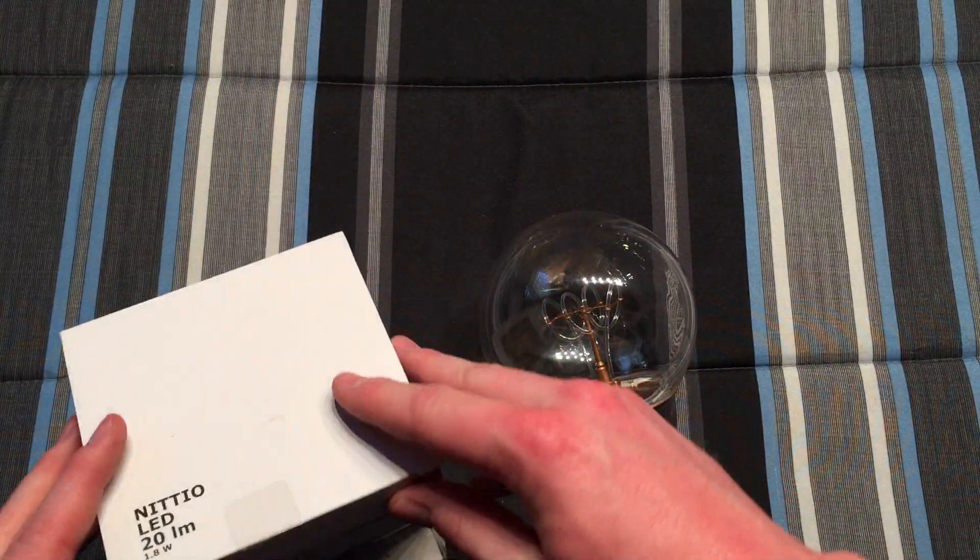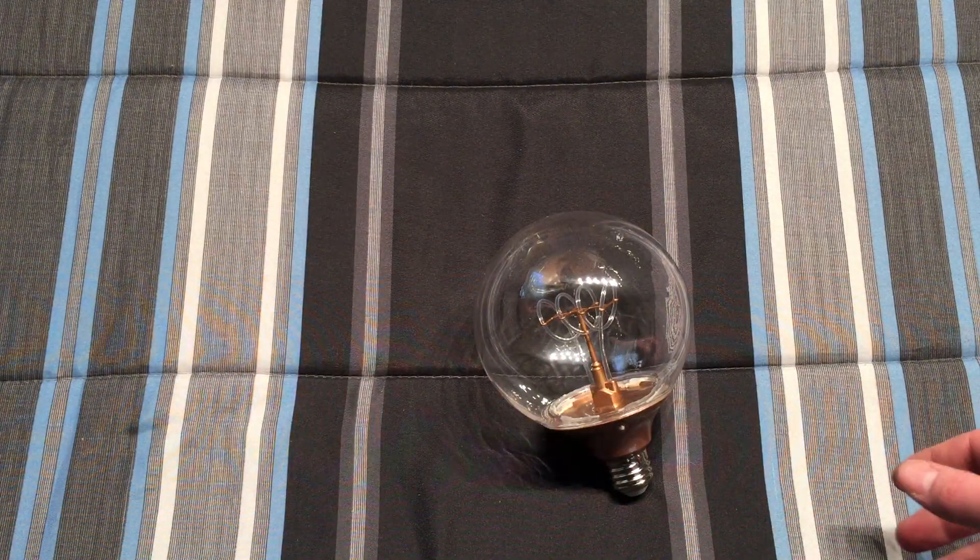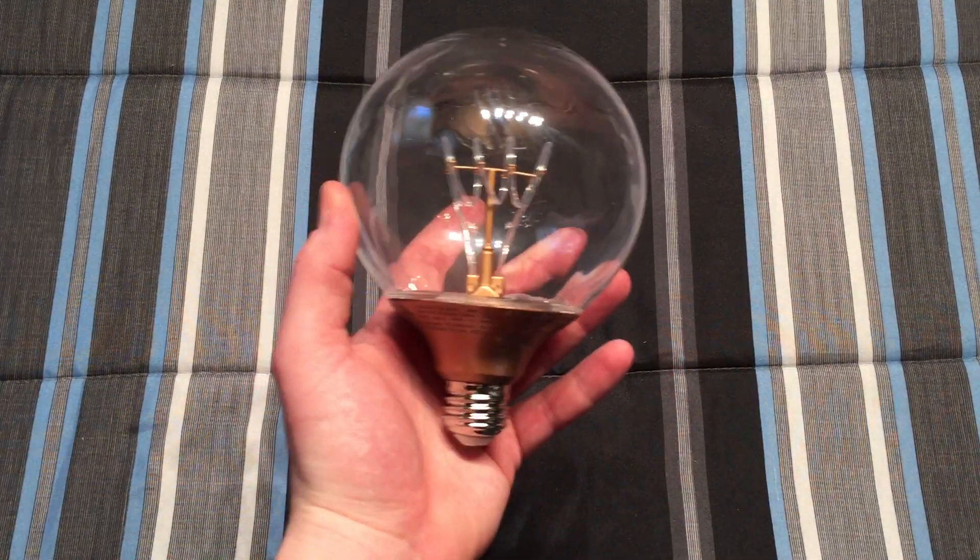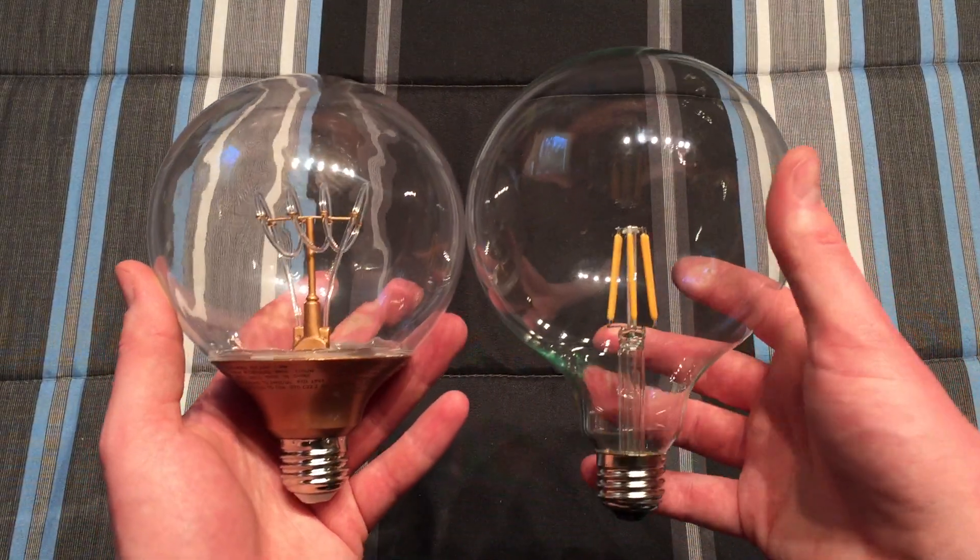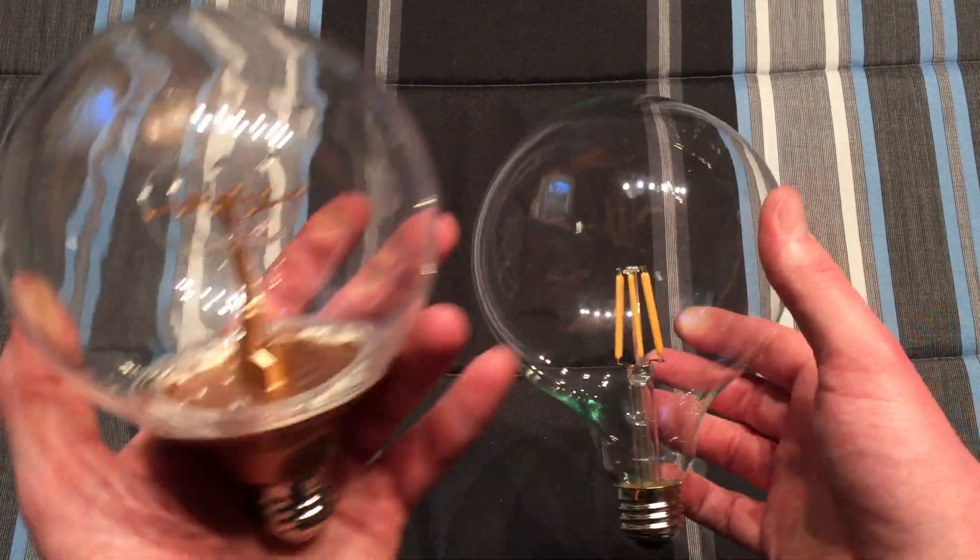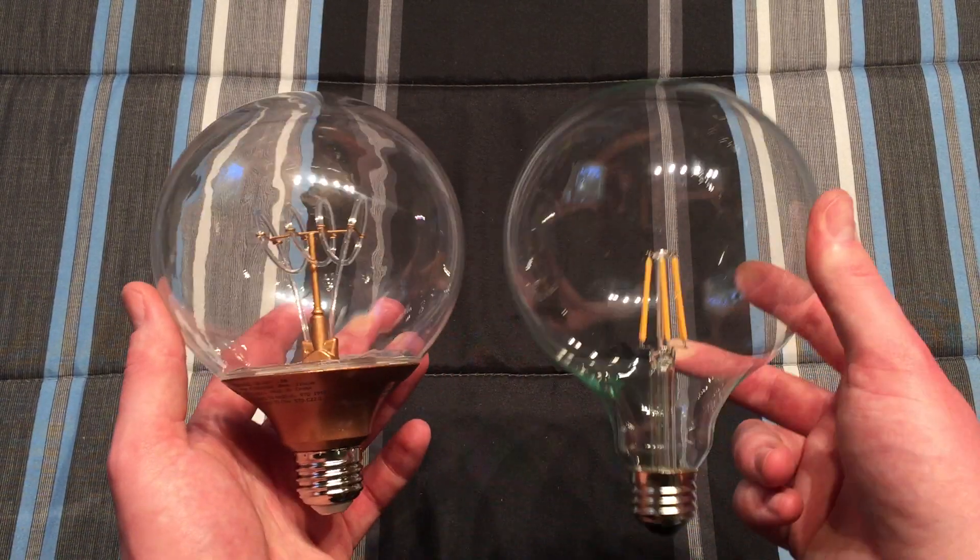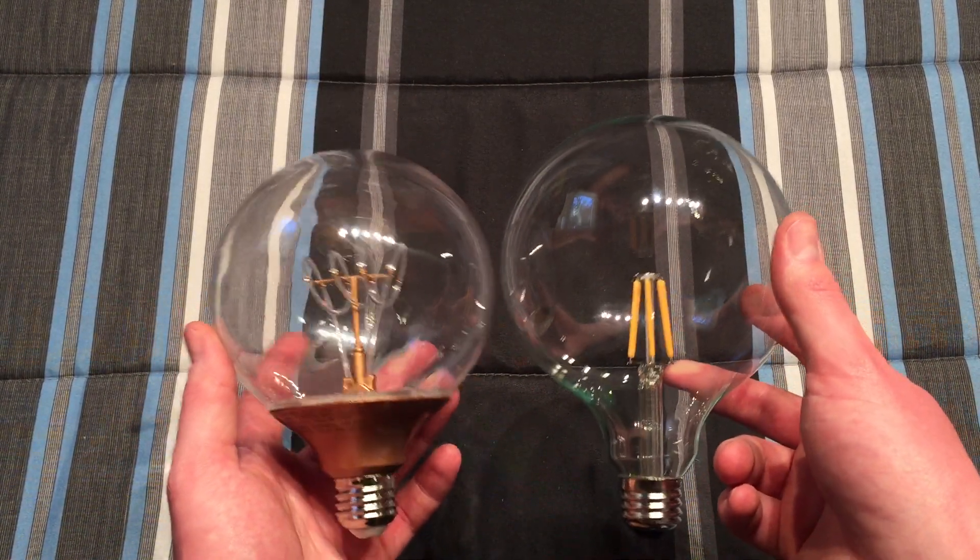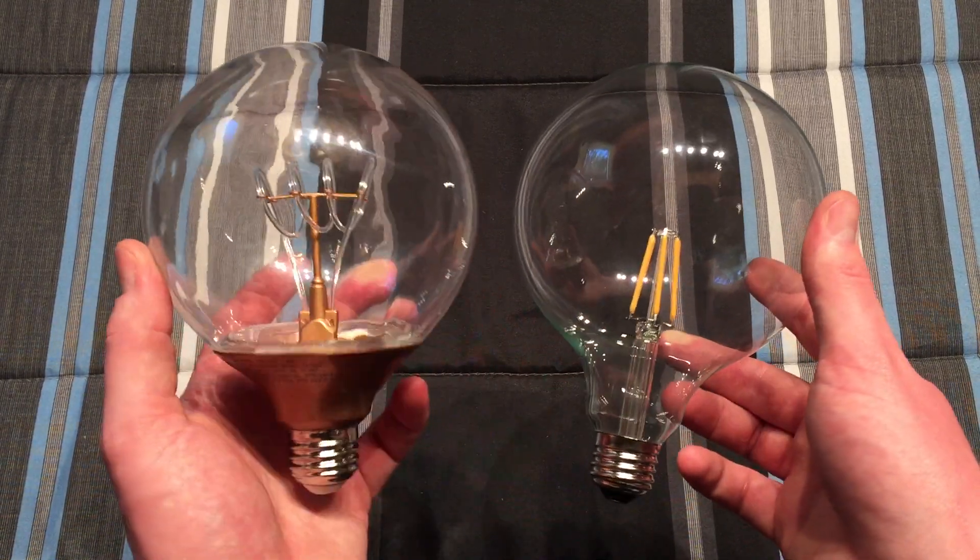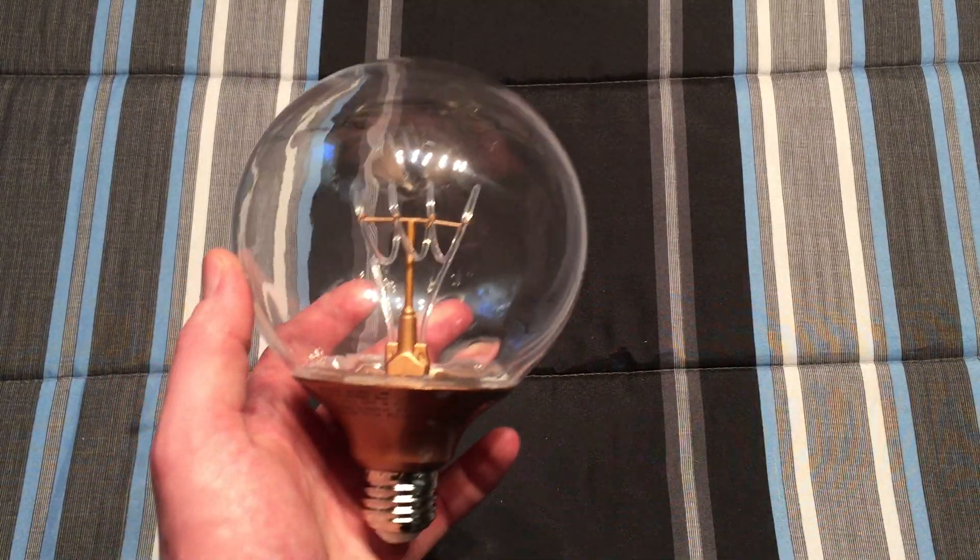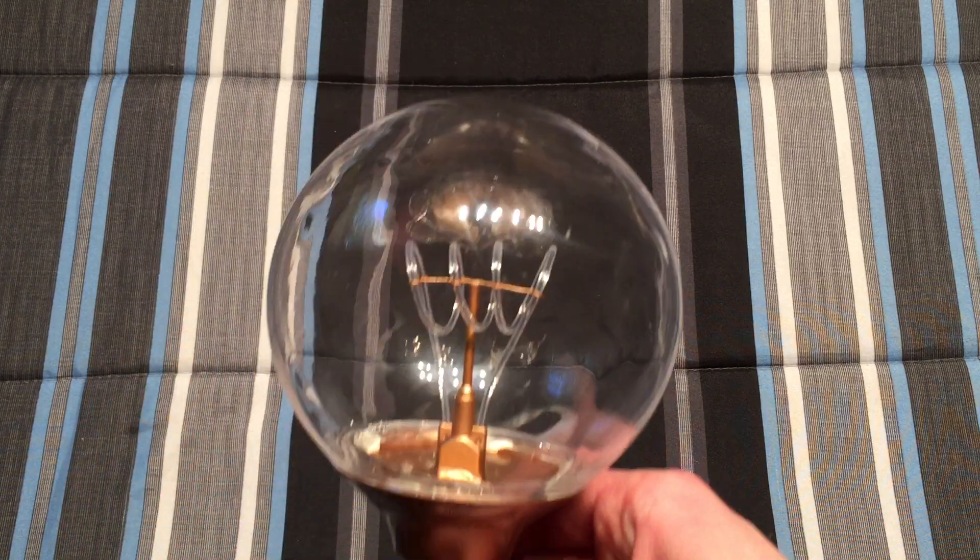So we have the globe itself. This is a G40 globe bulb size. So just for comparison, here's a regular G40 globe bulb. This one is LED filament but it's the same globe shape as a regular G40. As you can see it's a little bit shorter because the neck is missing, but same size and diameter basically.